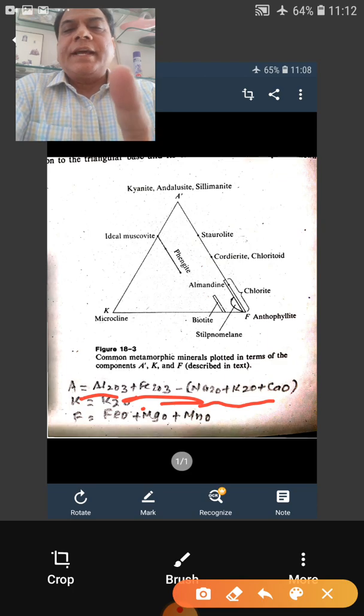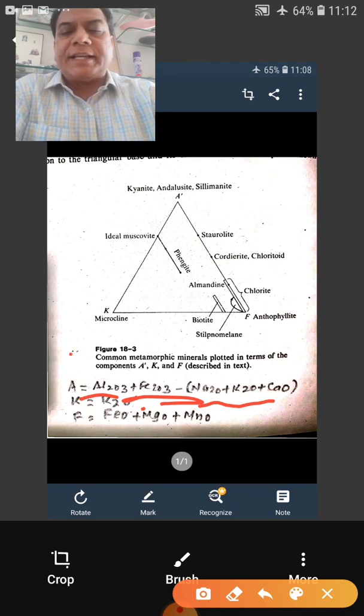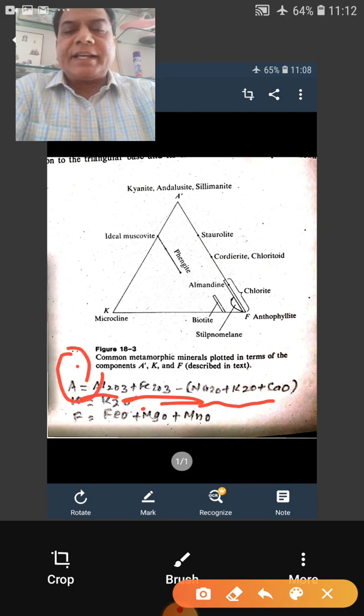In ACF, it was Al2O3 plus Fe2O3 minus Na2O plus K2O. Here it is minus Na2O plus K2O minus CaO. So this A in AKF diagram is different from your ACF diagram.